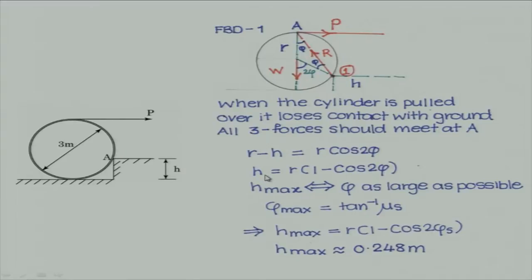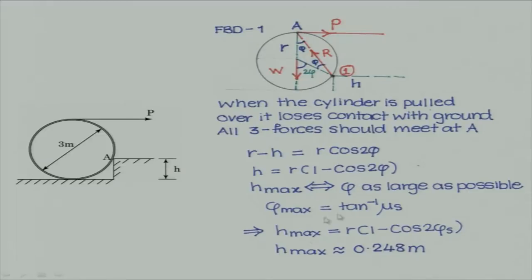Note that h max will be possible if this quantity is as large as possible — when φ becomes as large as possible. Since φ max is equal to tan inverse of μ, you put that in and you get what is the maximum value of the height.